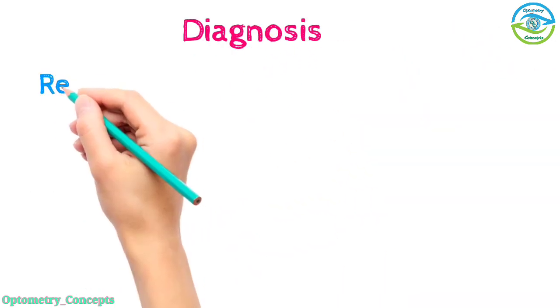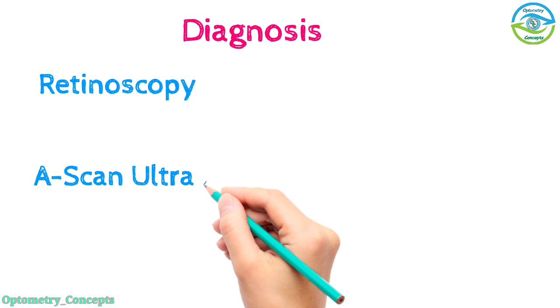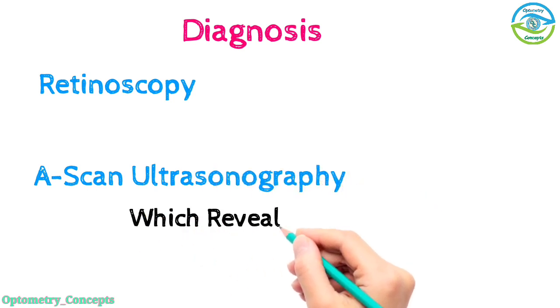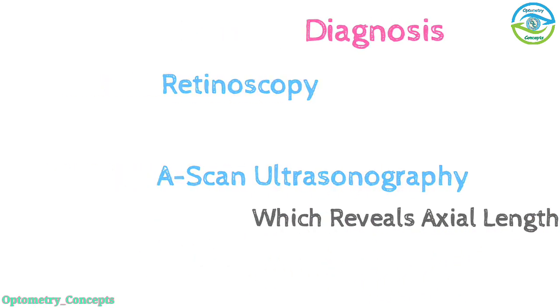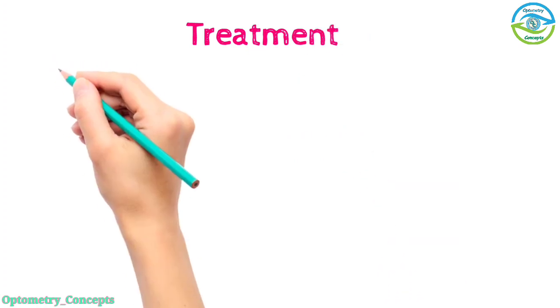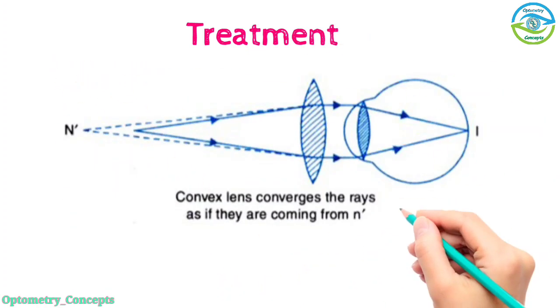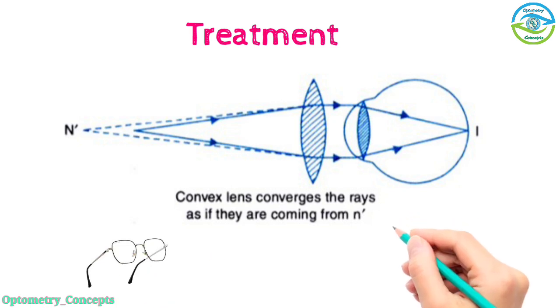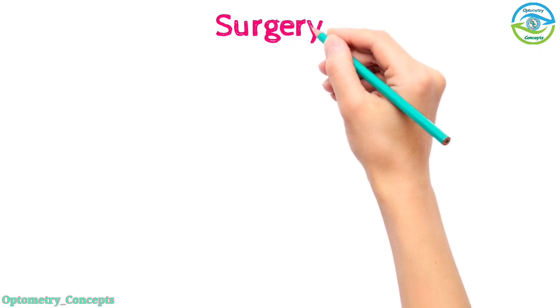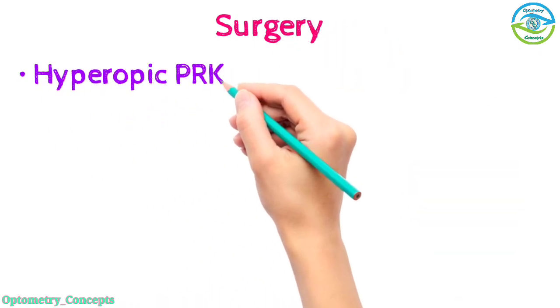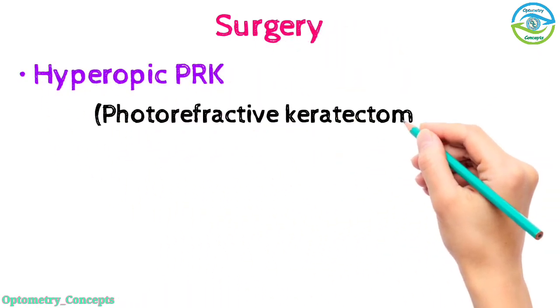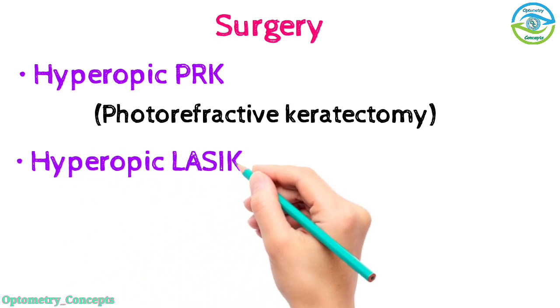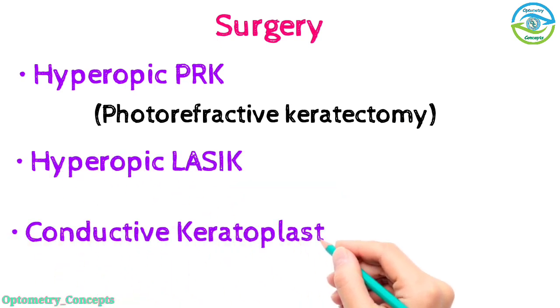Diagnosis with the help of retinoscopy and A-scan ultrasonography which reveals axial length. Treatment: hypermetropic errors are treated with convex lens. Mode of prescribing lens are spectacles and contact lens. Another mode of treatment is surgery like hyperopic PRK which is photorefractive keratectomy, hyperopic LASIK, conductive keratoplasty.